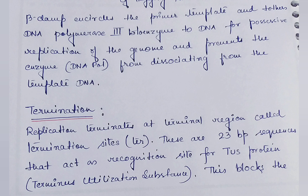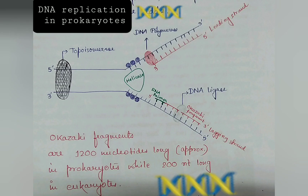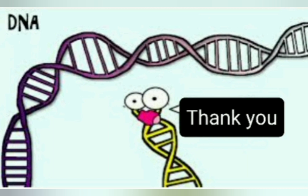Finally, in the termination phase, replication terminates at terminal regions called termination sites or ter sites. These are 23 base pair sequences that act as recognition sites for the Tus protein — terminus utilization substance. Tus blocks the movement of DnaB helicase, so there is no further helicase activity. The orientation of the Tus protein marks the termination of DNA replication. Thereafter, the Okazaki fragments are linked together by DNA ligase to give rise to the complete strand.